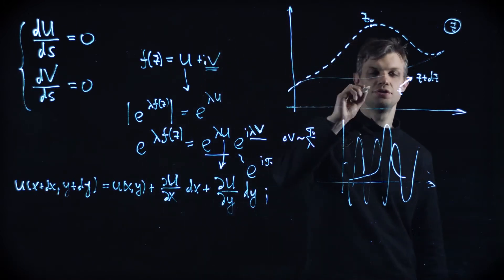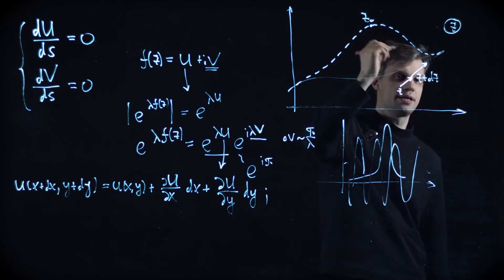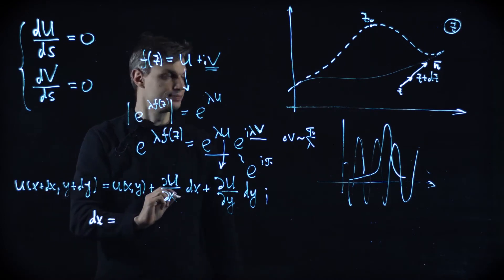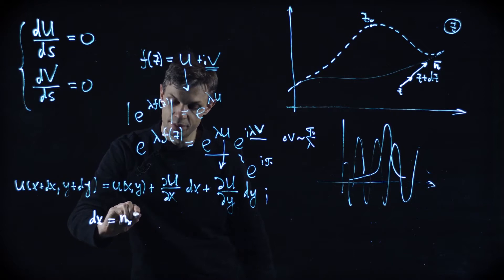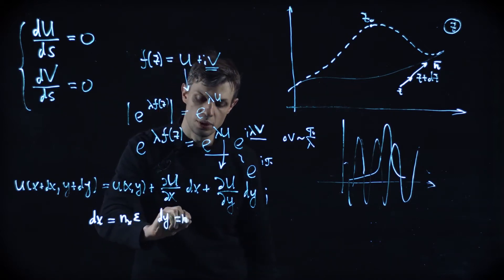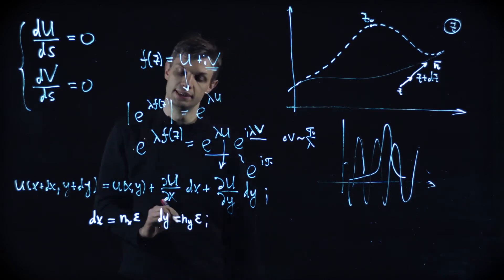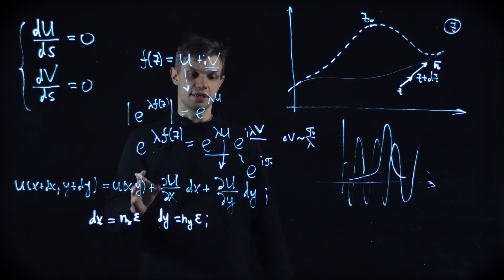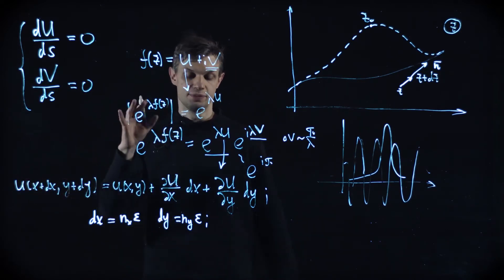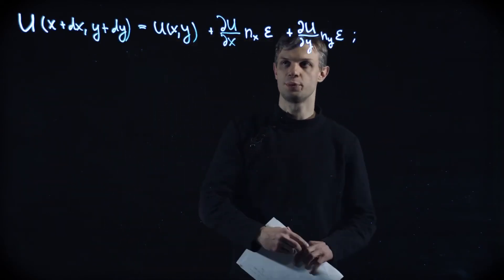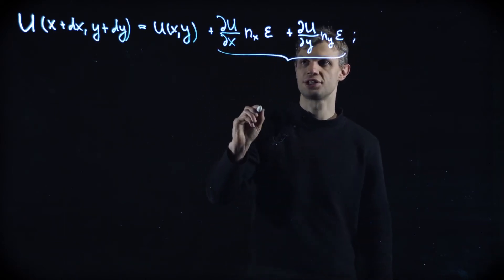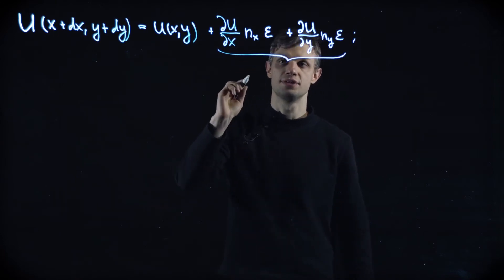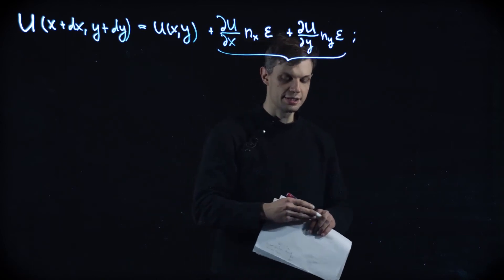Let's choose some direction defined by some unit vector n. So dx is nx times some small parameter epsilon, and dy is ny times epsilon. Our task is to find such nx and ny that the relief of this function drops in the fastest possible way — we are interested in when this change of u function is as large as possible and negative.